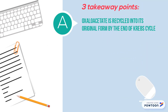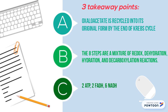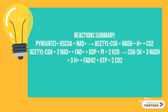What are the takeaway points from Krebs cycle? Basically, oxaloacetate is just recycled into its original form by the end of Krebs cycle. And the eight steps are a mixture of redox, dehydration, hydration, and decarboxylation reactions, and basically the products that we just mentioned in the earlier slide.